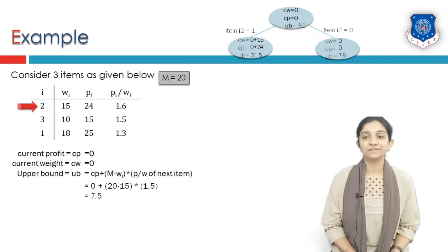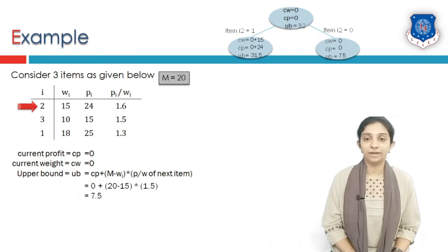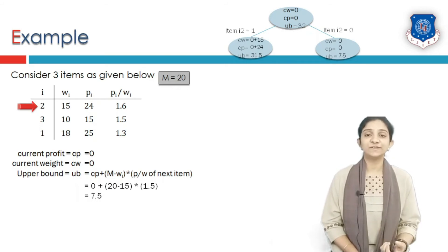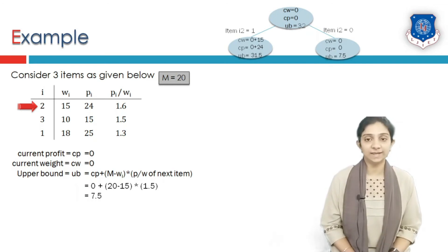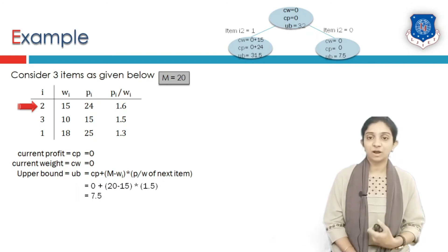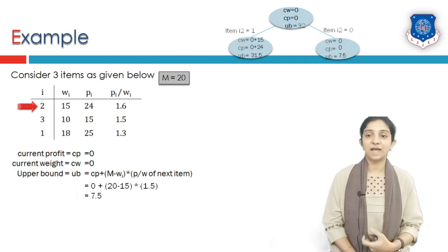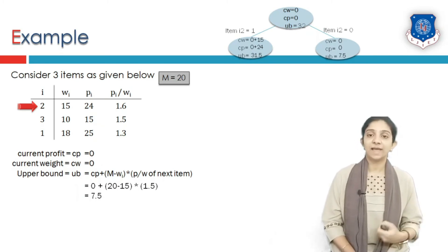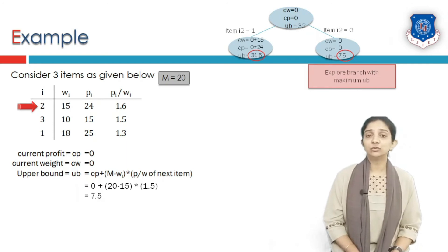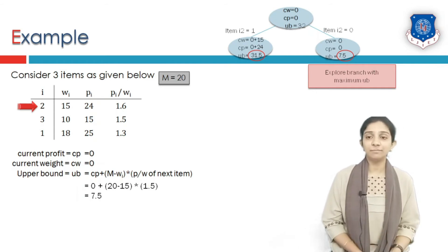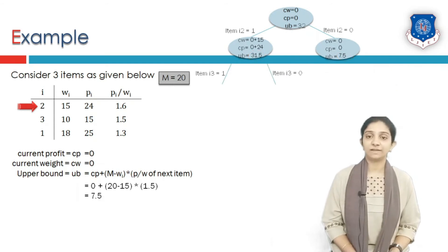We must decide which node to explore next. We compare the upper bounds of all live nodes and select the one with the maximum upper bound as the next node to expand. Comparing 31.5 and 7.5, we select the left node with upper bound 31.5 for exploration.